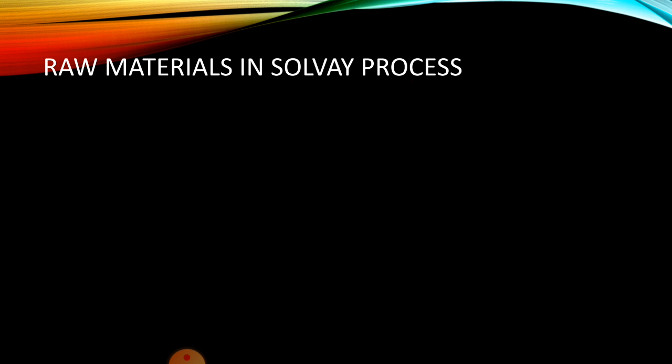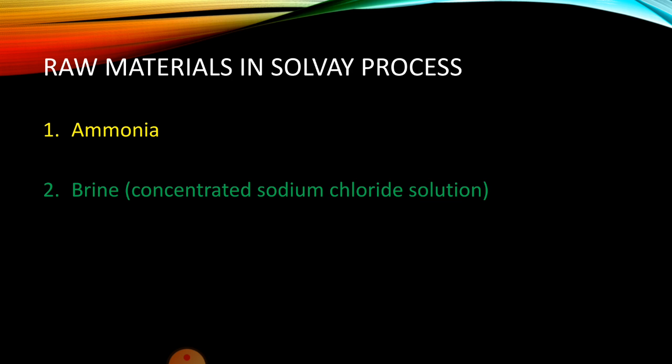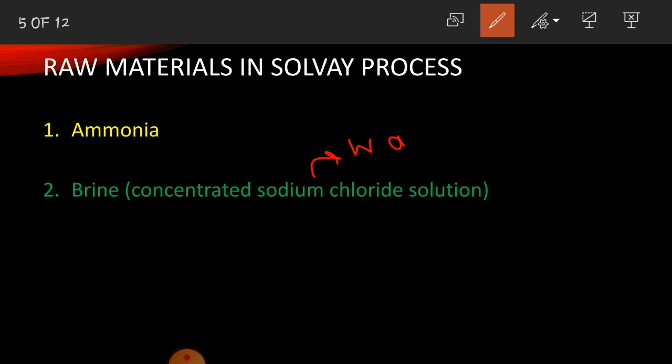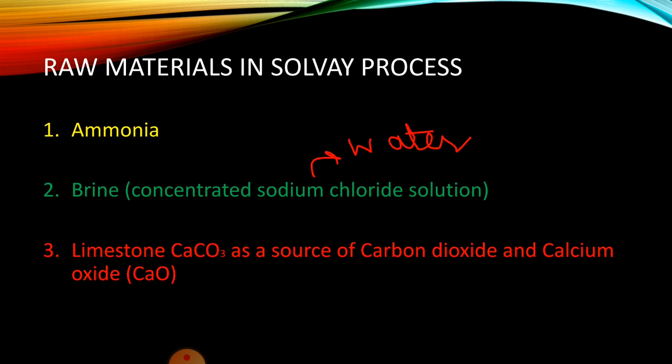Now let's move towards the Solvay process. We will first discuss the raw materials used. There are three main raw materials: ammonia, which is expensive but can easily be recovered during the process; brine, which is the concentrated aqueous solution of sodium chloride in water; and limestone, which acts as the source of carbon dioxide and calcium oxide — both of which are involved in important chemical reactions during the Solvay process.